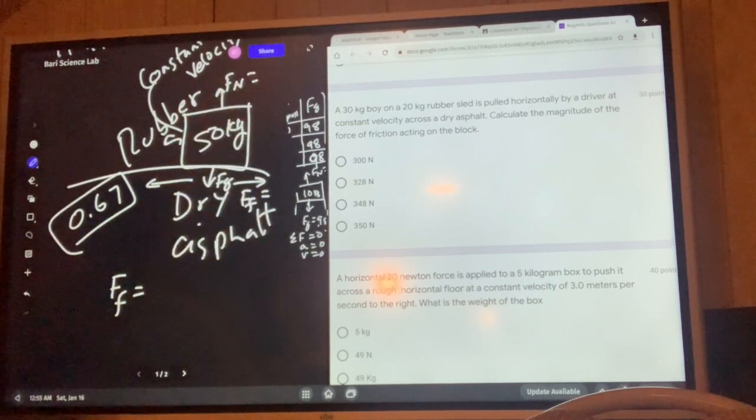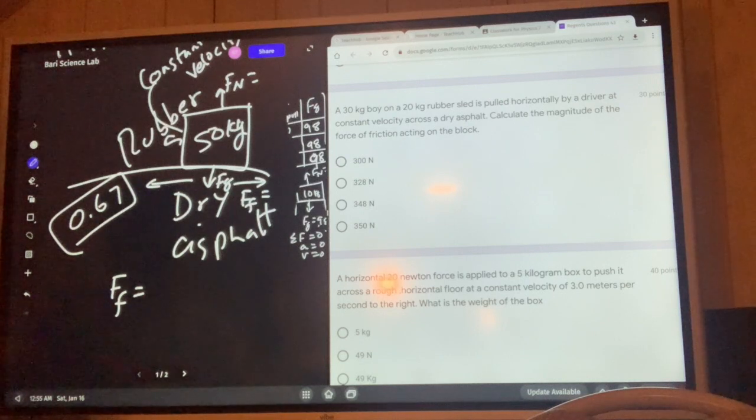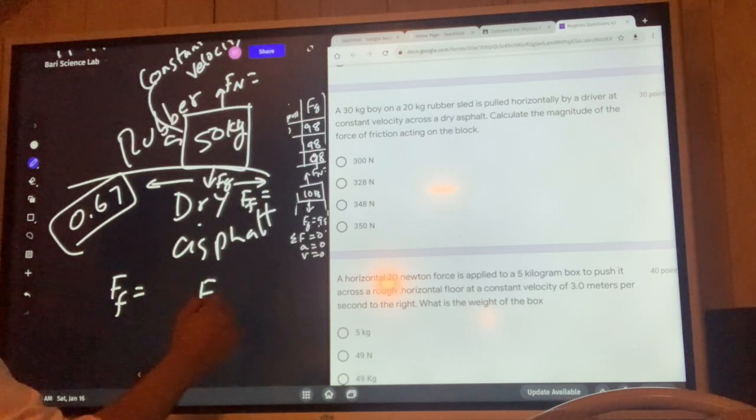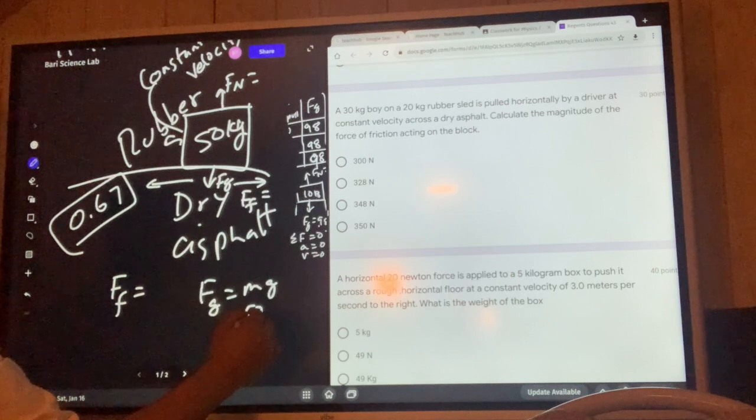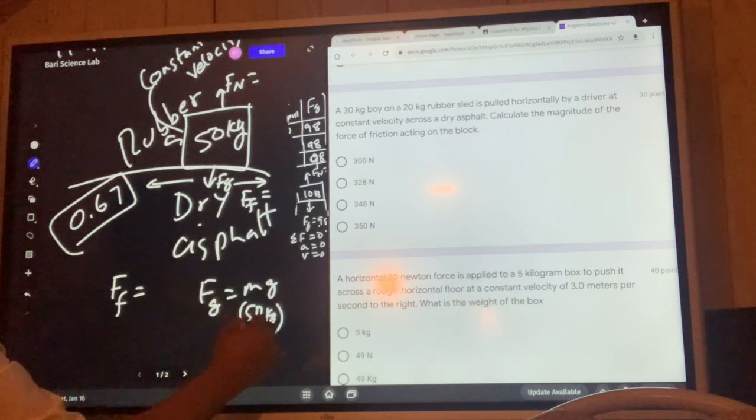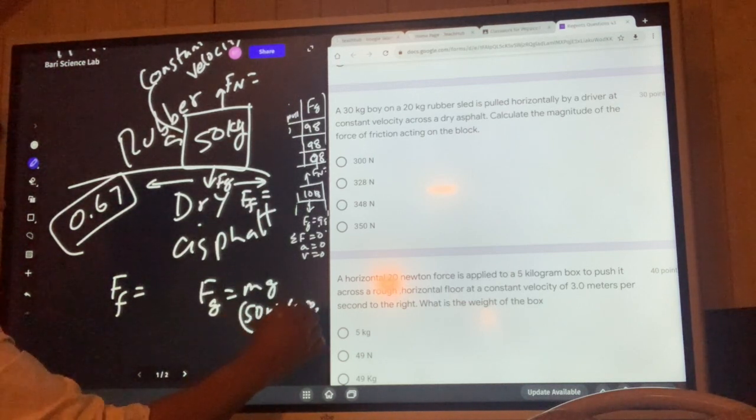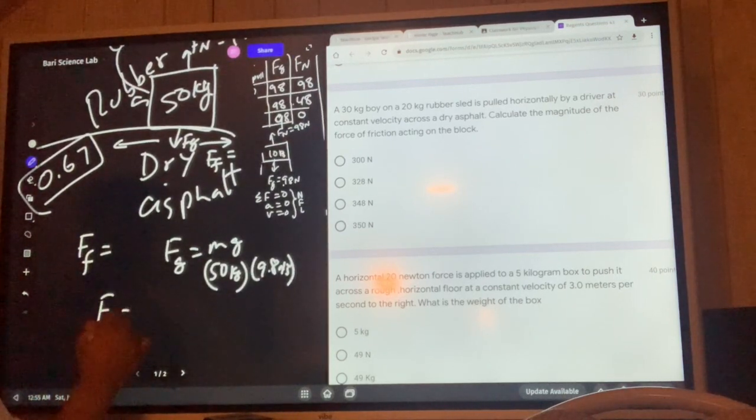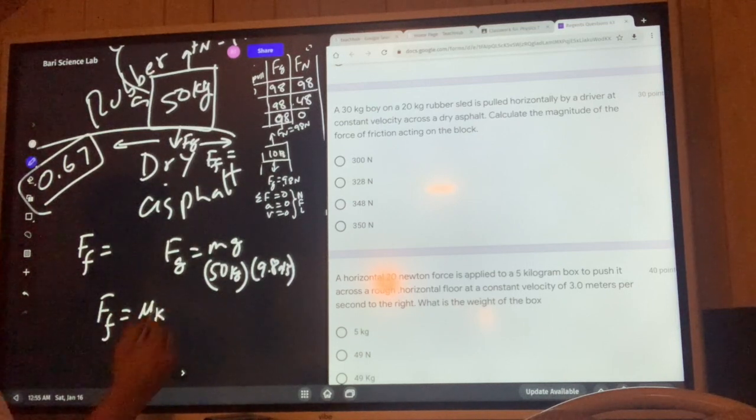The weight is Fg which is mg, which is 50 kilograms times 9.8 meters per second squared. Friction is μk because it's moving, times the normal force.